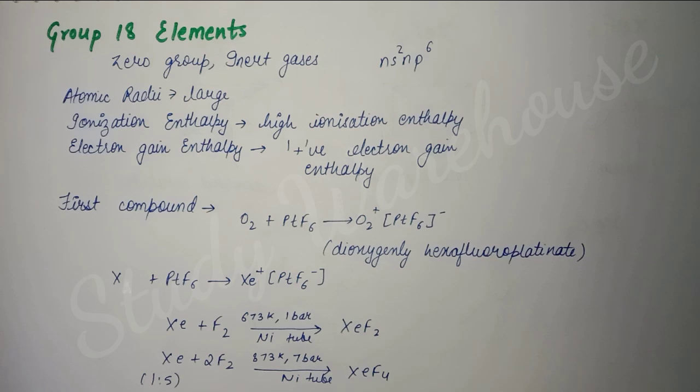If we talk about atomic radii, it is very large because their octet is complete. If their octet is complete, there will be repulsion among electrons. More electrons are present, so their size automatically increases. For ionization enthalpy, it is also high because their octet is already complete, so we need more energy to remove an electron. If we talk about electron gain enthalpy, it is positive because they won't gain electrons either. So when we try to make them gain electrons, energy will be required or energy will be absorbed, which is why there is positive electron gain enthalpy here.